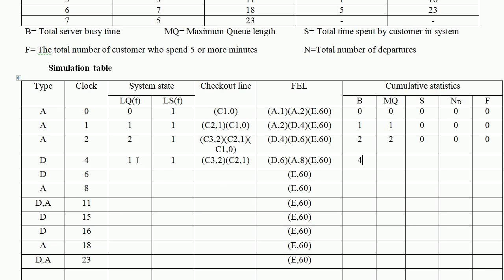MQ retains its maximum value of 2. S (total time spent in system): customer 1 spent 4 minutes (departed at 4, arrived at 0), so S = 4. ND = 1 (one customer departed). F = 0: customer 1 spent only 4 minutes, which is less than 5, so F remains 0.